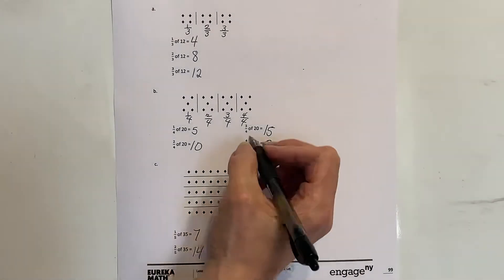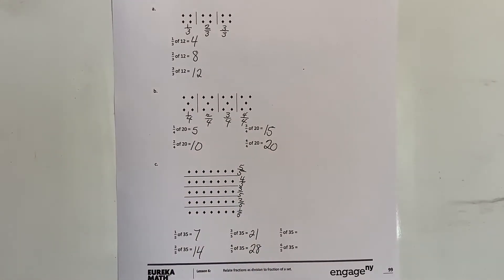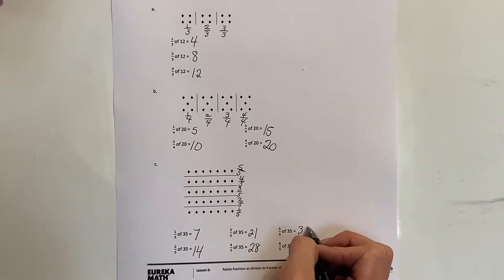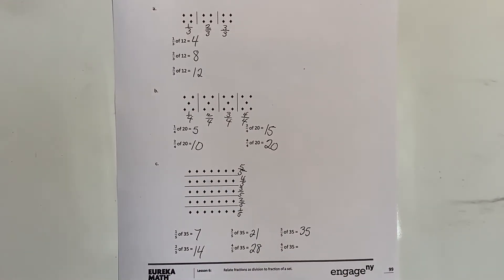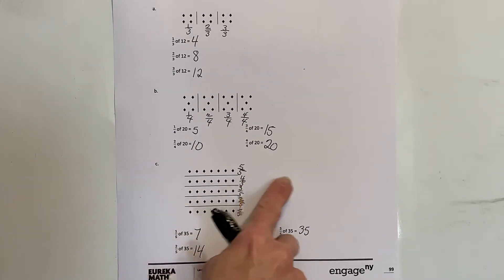Five-fifths is the same as one whole - numerator and denominator the same. That would be the whole thing, or all of the counters, which would be 35. Now they've asked us to do six-fifths. We don't have another group on here, so how would we figure that out? Well, I know there are seven in each group, so I would need one more group.